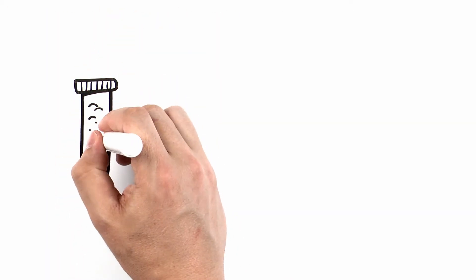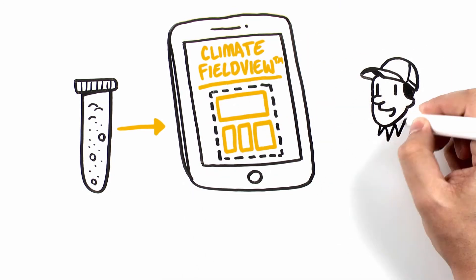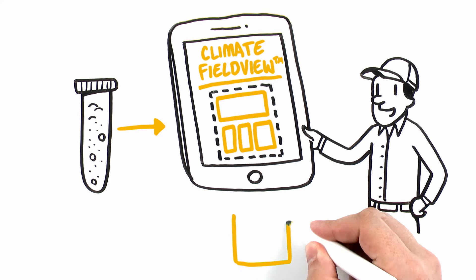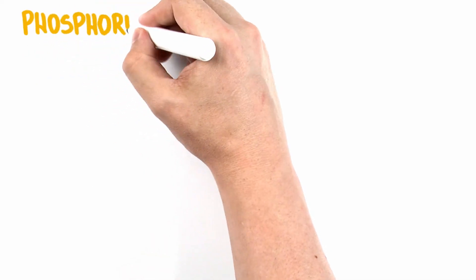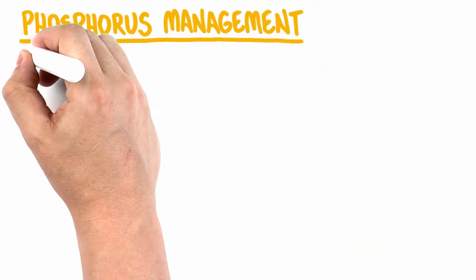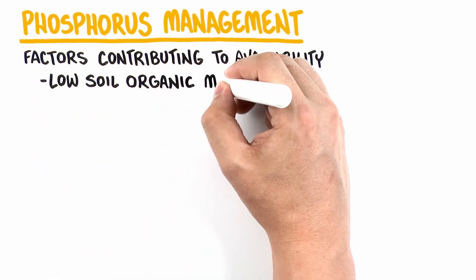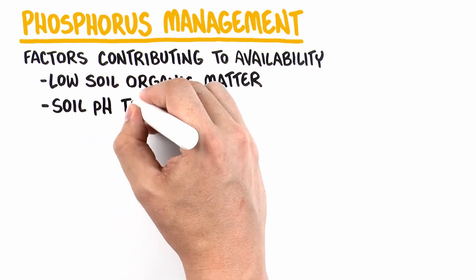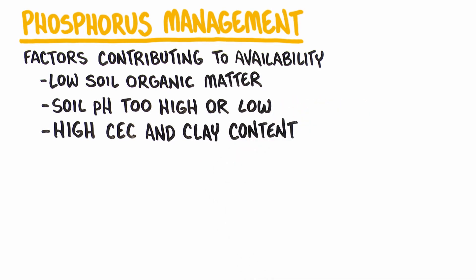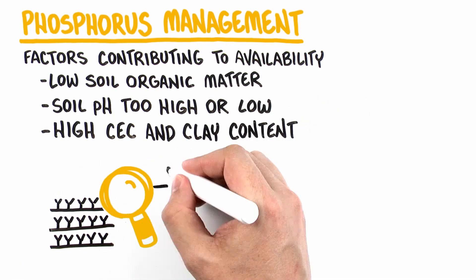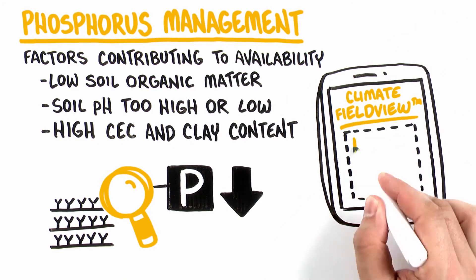Ingest your most recent grid soil sample data. View the data in Climate Field View. Share your data with your agronomy partner. And most importantly, develop a plan for your fields on how to better manage phosphorus. Remember, phosphorus management is challenging. Factors that contribute to availability include: low soil organic matter levels, soil pH that is too high or too low, high CEC, and high clay content. Evaluating field-level soil data helps assess phosphorus deficiency, and Climate Field View offers several options to evaluate soil data.